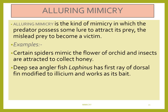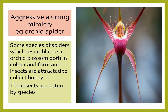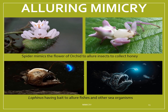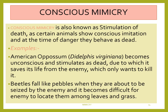Next is alluring mimicry. In this kind of mimicry, the predator possesses some lure to attract its prey and misleads the prey to become its victim. For example, certain spiders mimic the flower of orchids and insects are attracted to collect honey. A very important example is shown by the deep-sea anglerfish Lophius. It has the first ray of the dorsal fin modified into an illicium which works like a bait. It is bioluminescent and it attracts other fish. Some species of spider resemble the orchid blossom both in color and form, and insects attracted to collect honey are eaten by the spiders. Lophius uses a bait to allure fishes and other sea organisms, killing and consuming them.